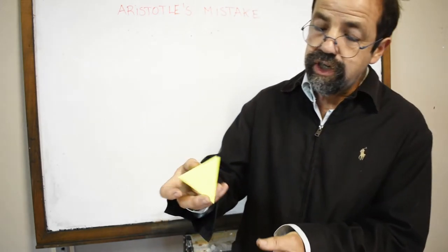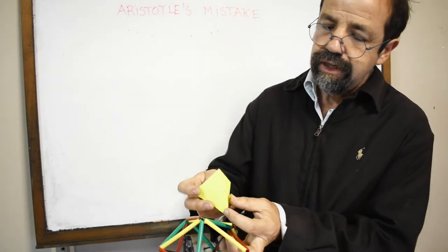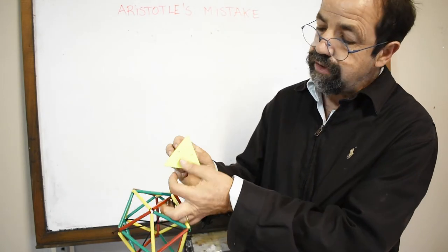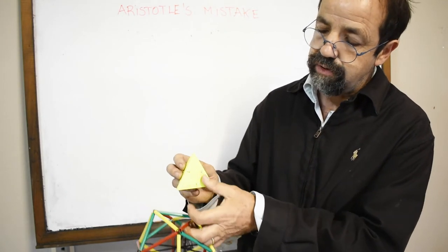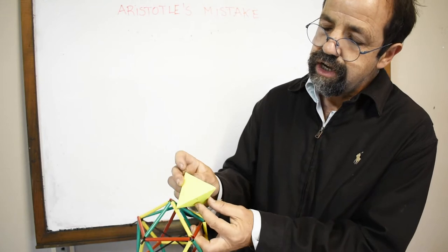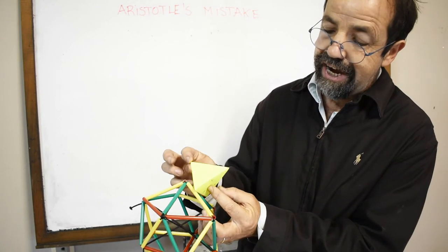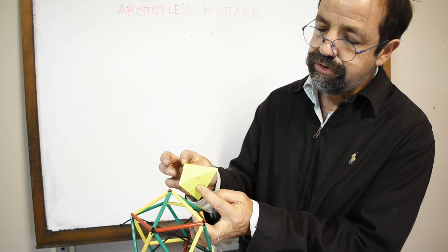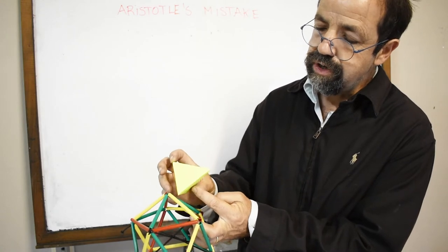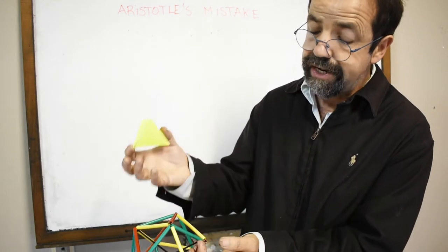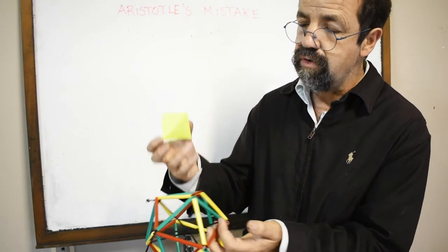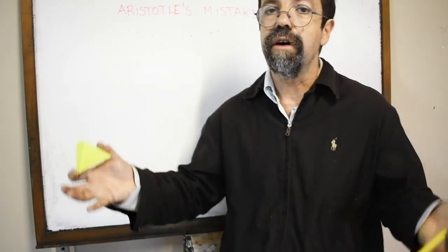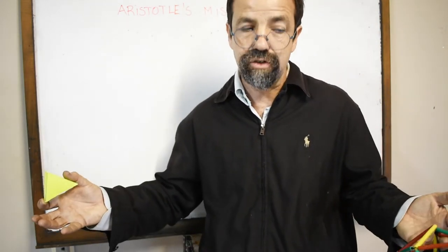In this tetrahedron, we can easily calculate the base area because it's an equilateral triangle. We need to calculate its height in order to find the volume of one tetrahedron, then multiply by 20 to get the volume of the regular icosahedron.